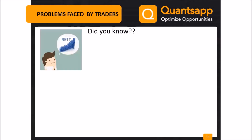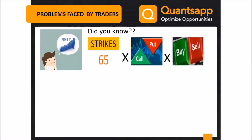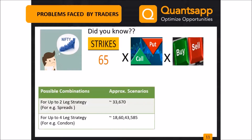Let's take a case of Nifty. In Nifty itself, there are 65 active strike prices on the call and put side, plus we have the option to buy or sell them. With this combination, if we had to form a two-leg strategy, the possible number of scenarios goes up to 33,670.